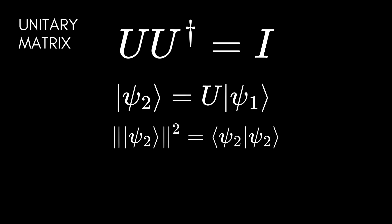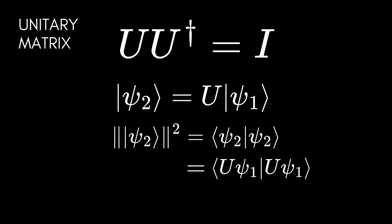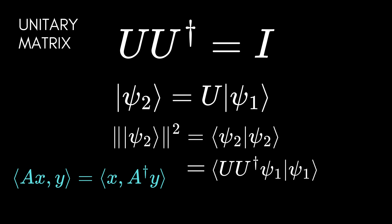One interesting property of a unitary matrix is that it preserves the norm. It means that if I apply a unitary matrix to a quantum state psi-1, then the length of psi-2, the output, is equal to the length of psi-1, the input. The length of psi-2 is the inner product of psi-2 with itself. But psi-2 is the application of unitary matrix U on psi-1. We have the inner product of U*psi-1 with U*psi-1, and for a matrix A, the inner product of A*x with y equals the inner product of x with A-dagger*y.